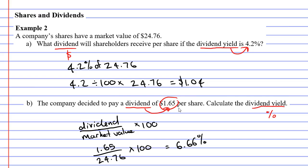Usually when you see the formula and they say times 100, they say times 100%. That seems to throw some people off because they think if you times it by 100%, you're not really changing anything. What they really mean is times it by 100 and then place the percentage at the end. Anyway, that concludes example two. Remember to read the description below for links to workbooklets that relate to this video.